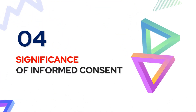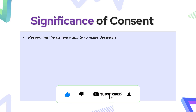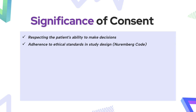Now let us look at the significance of informed consent. First, through informed consent we respect the subject's ability to make decisions — by taking written consent we ensure the subject is capable of making their own life decisions and is not coerced or forced into the trial. Next, through the consent process we adhere to the ethical standards of the clinical trial. The source of these ethical standards is the Nuremberg Code — in that case, the Nazis performed inhuman experimentation with no consent taken, so the world learned and implemented ethical standards where consent plays a very important role.